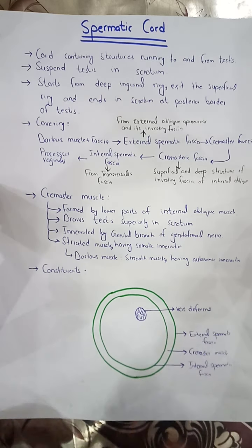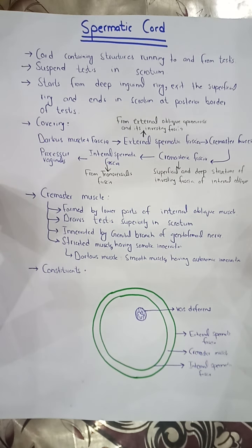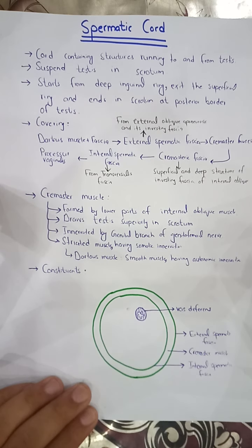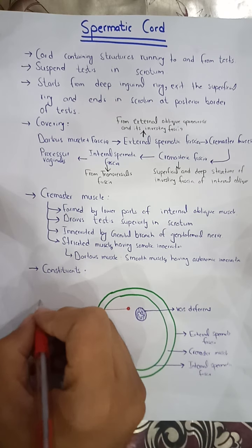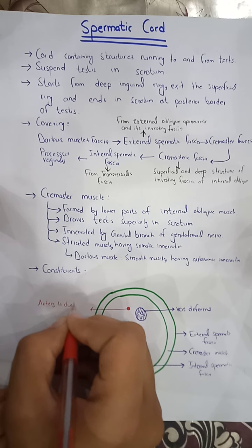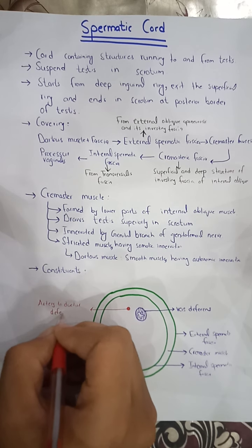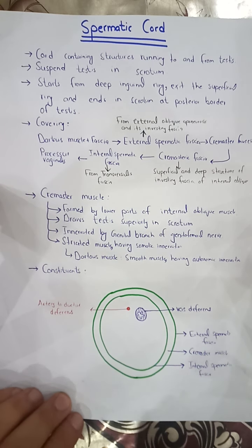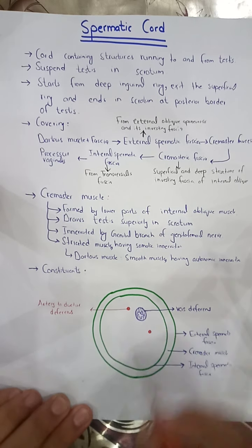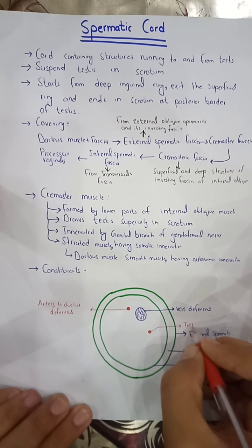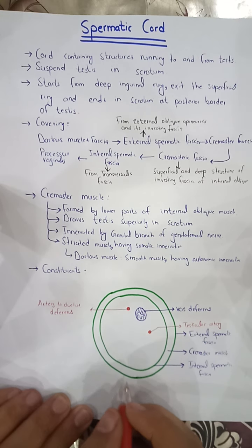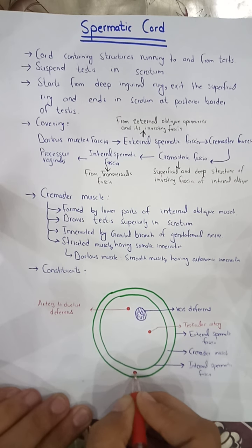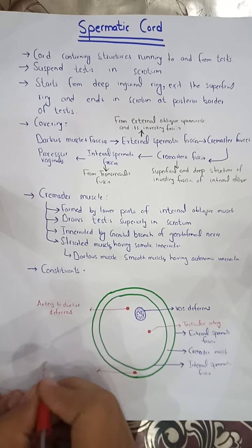Regarding the arteries, there are a total of 3 arteries. The first is the artery to the ductus deferens. The second is the testicular artery. The third is the cremasteric artery, which supplies the cremaster muscle.